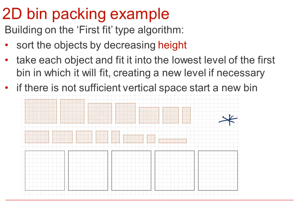Step two is to take each object and fit it into the lowest level of the first bin in which it will fit, creating a new level as necessary. If there is not sufficient vertical space, then we start a new bin. When we have placed all the objects, then we stop.